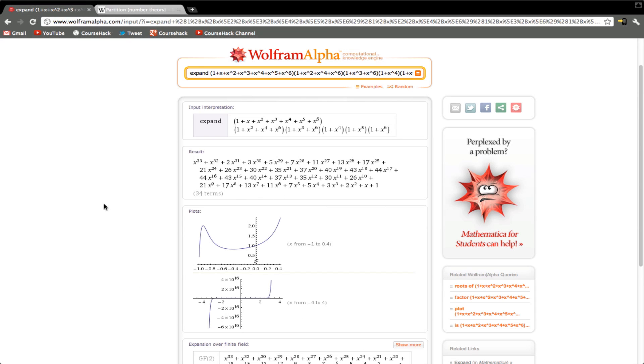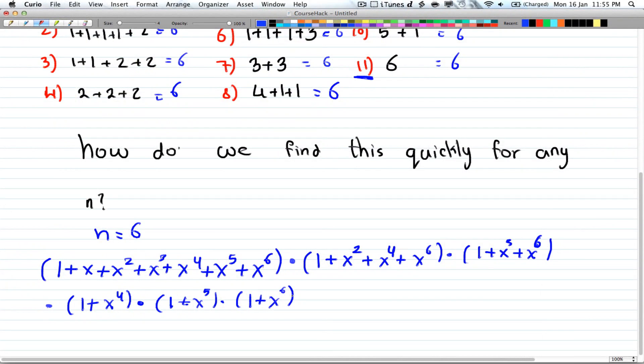If you want to go beyond 6, then you have to add these numbers here. So you have to have plus x to the power of 7. So this is to calculate the number of 6s. If you want 7, then you're going to have to add plus x to the 7 here, and times 1 plus x to the 7. And that will give you how many ways, how many partitions there are.